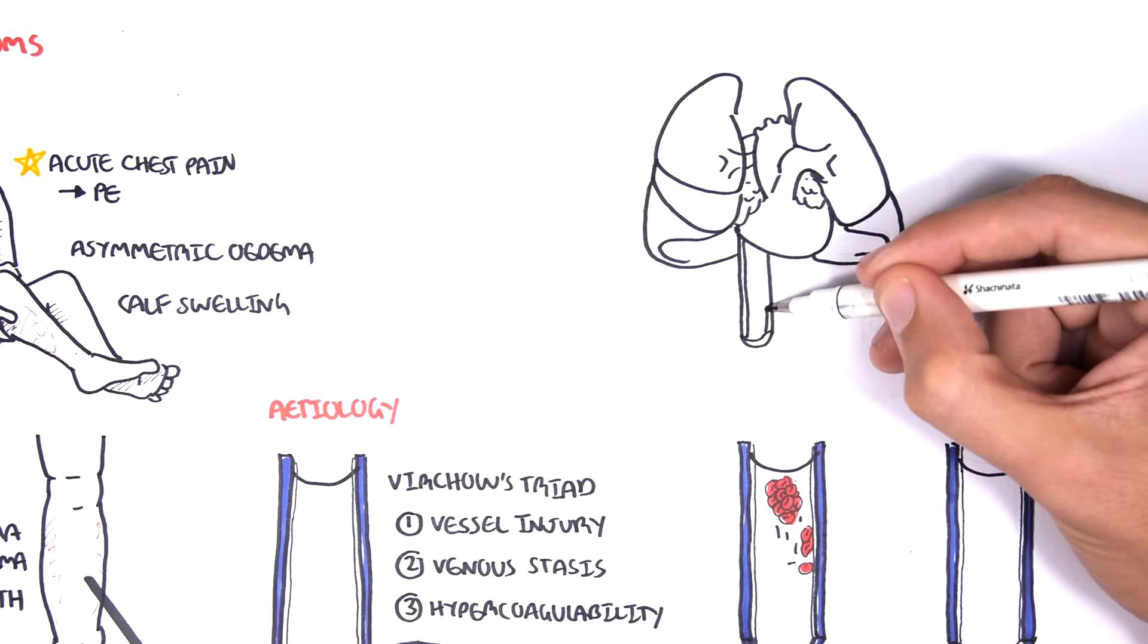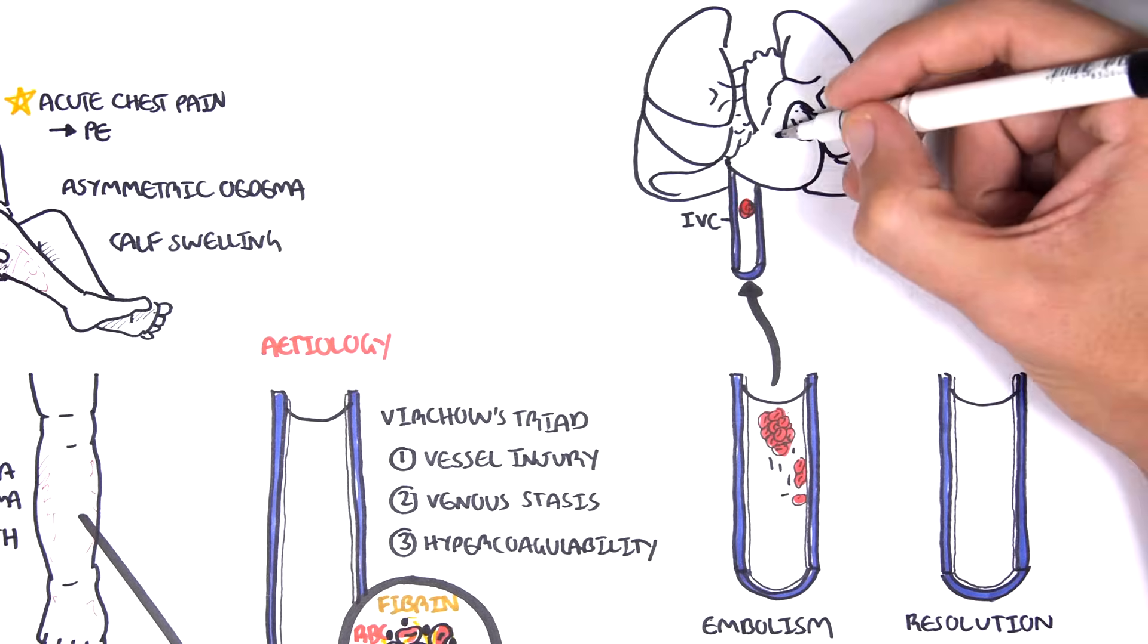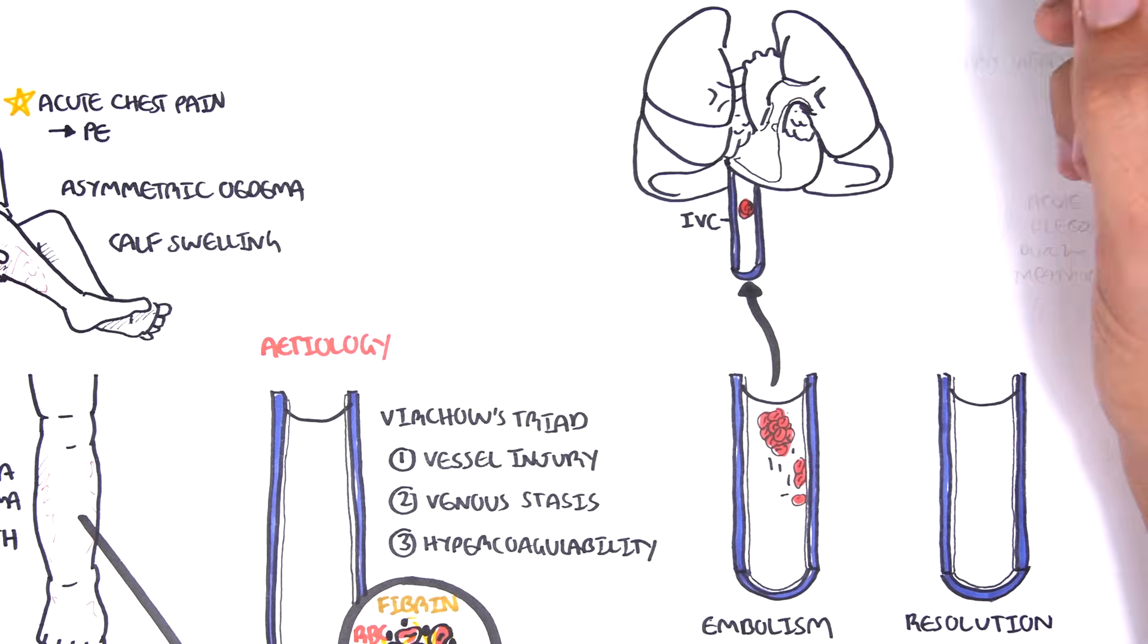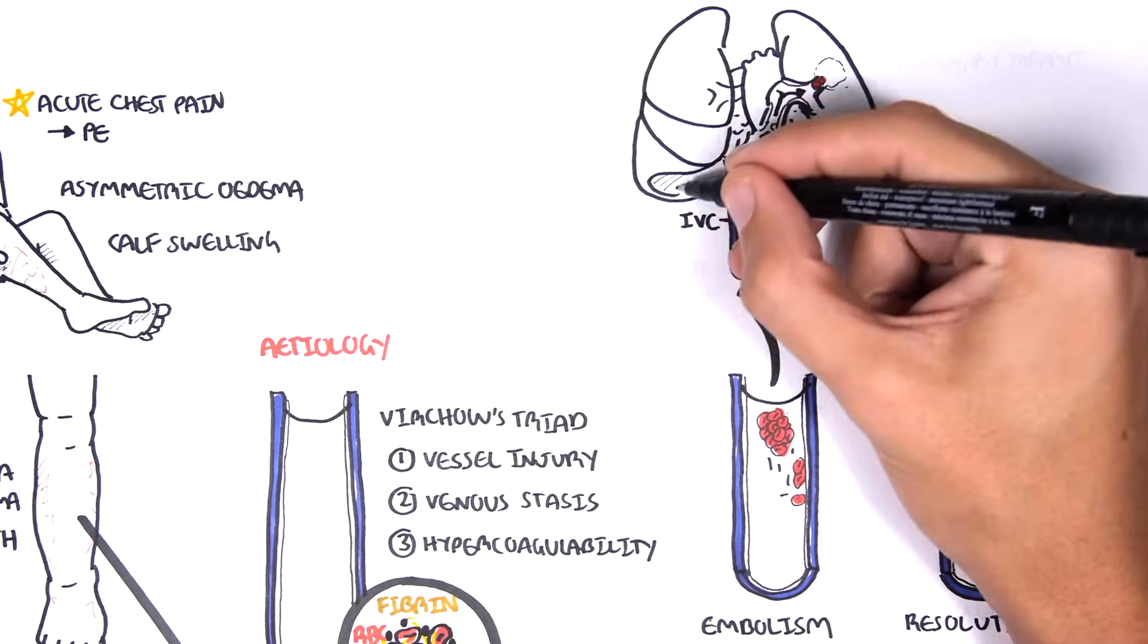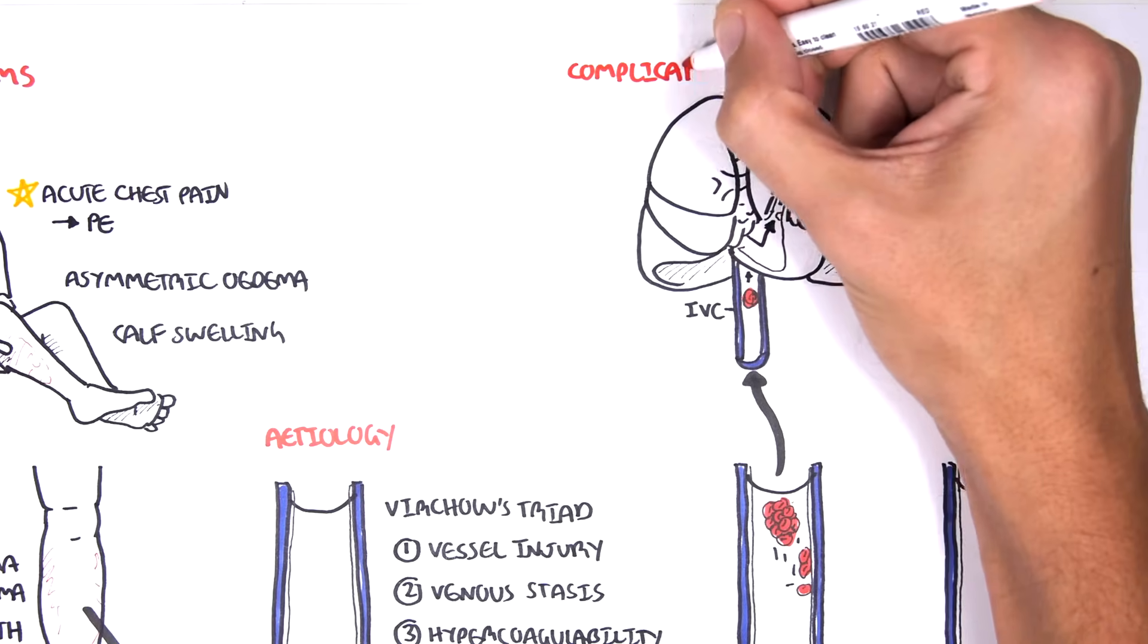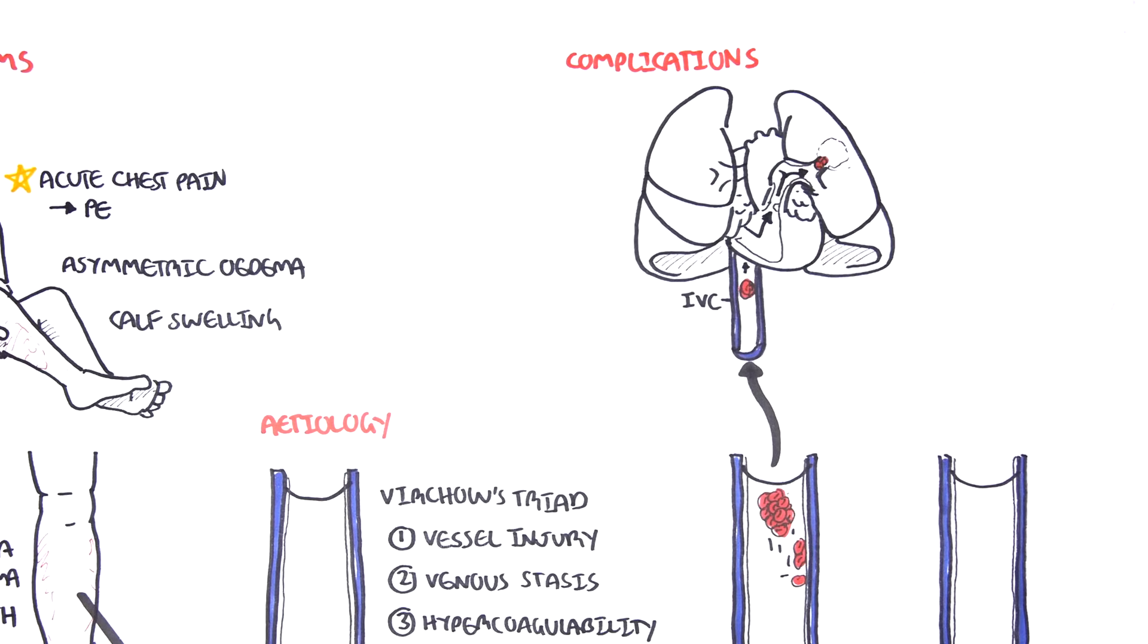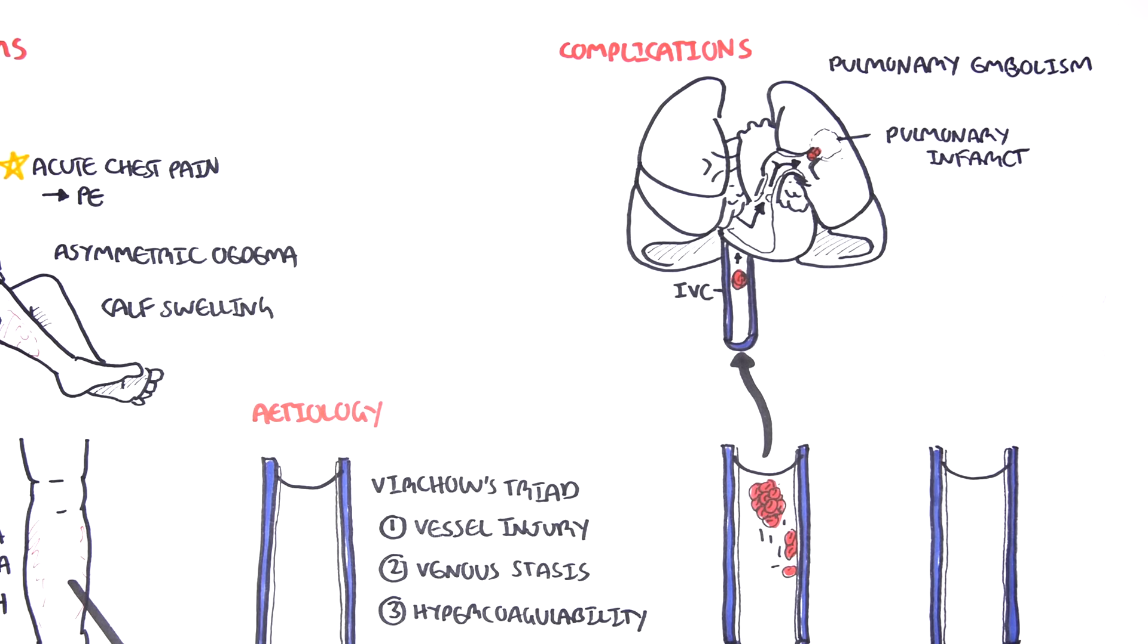When a thrombus dislodges and becomes an embolus, it can travel up to the heart via the inferior vena cava. The heart will then pump the embolus to the pulmonary circulation. The embolus can then lodge into the pulmonary arteries, causing what's known as a pulmonary embolism. And this can subsequently cause pulmonary tissue infarcts if it is big. And so pulmonary embolism is a big complication of deep vein thrombosis.